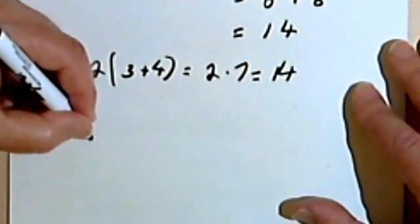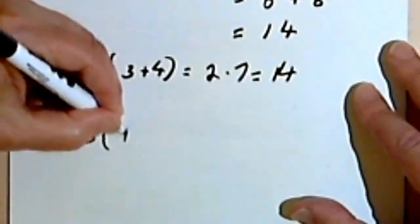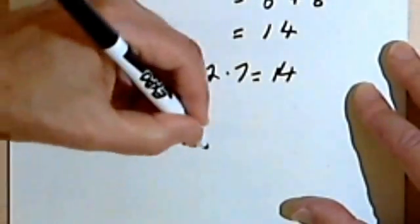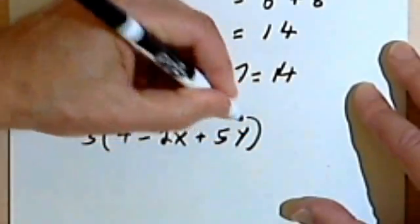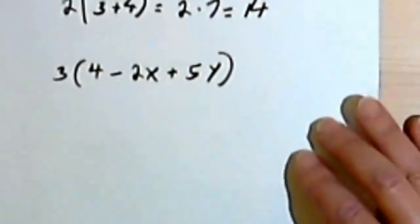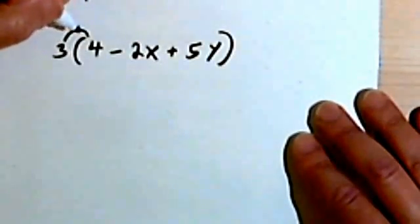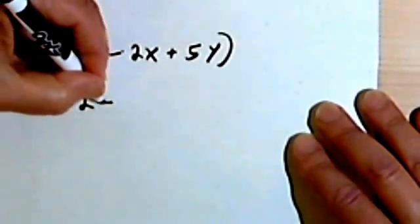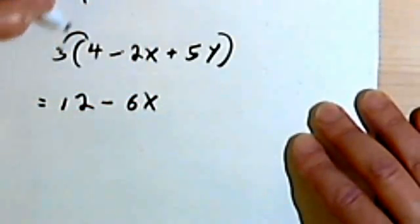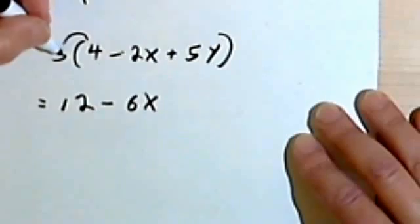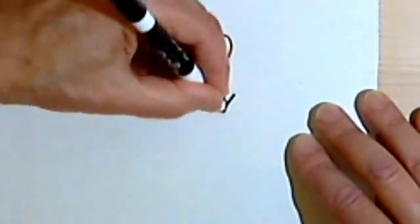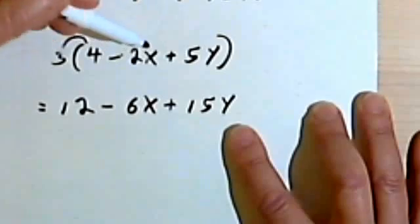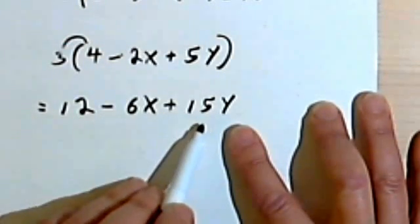So in other words, I could have something like 3 times, let's say, 4, let's put a minus sign in, minus, let's use a variable, 2x plus, I don't know, 5y. And to distribute this multiplication, what I'm going to do is take the 3 times the 4, and that's going to give me 3 times 4 is 12. I'll take the 3 times the negative 2x, so I'll have negative 6x, 3 times the 5y, so that will give me a positive 3 times 5 is 15. And the result I get from distributing this 3 over this 4 minus 2x plus 5y is going to be this, 12 minus 6x plus 15y.